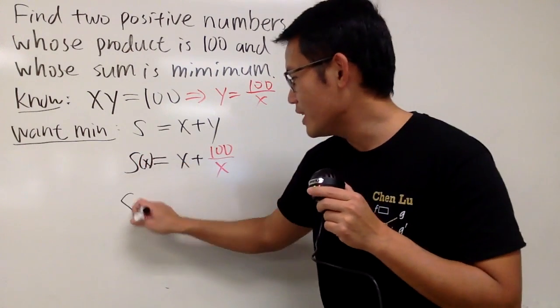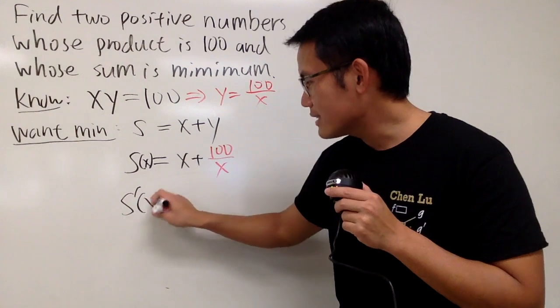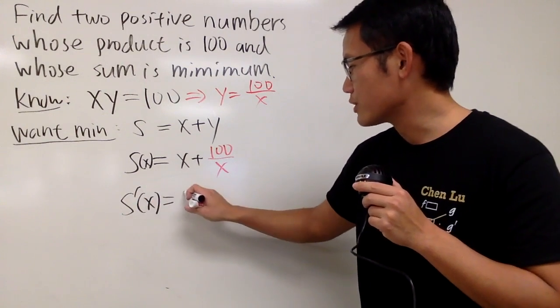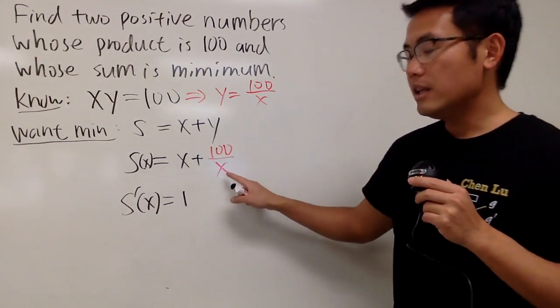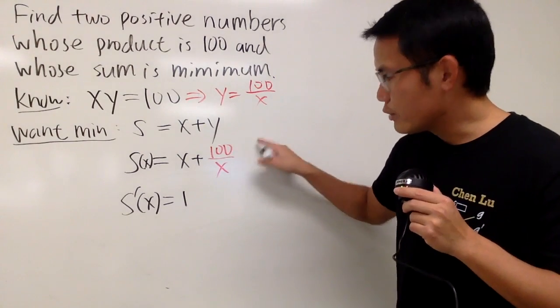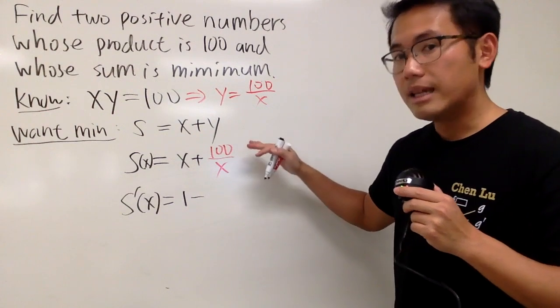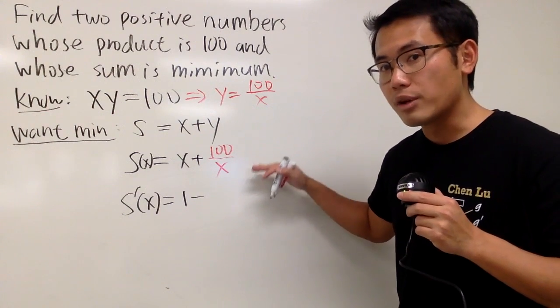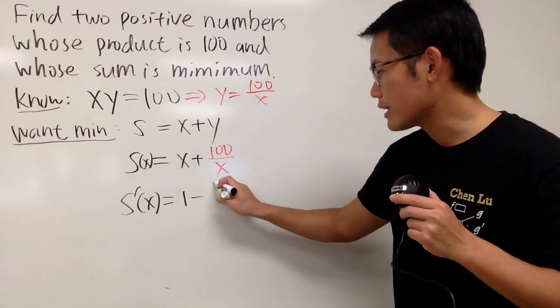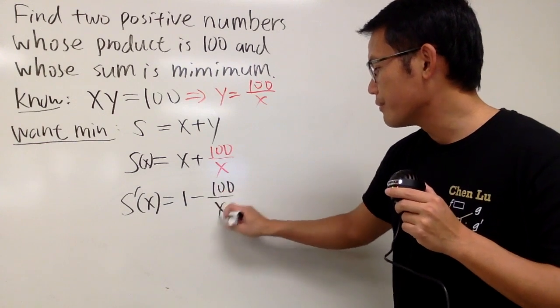And then let's go ahead and do our usual derivative. S prime of x. The derivative of x is just going to be 1. And if you look at the x as x to a negative 1 power like this, bring the negative to the front so we get negative. And then minus 1 to the power, which is x to a negative 2. Don't forget the 100 on the top. So we have 100 over x squared like this.